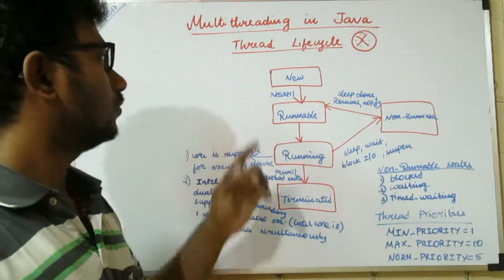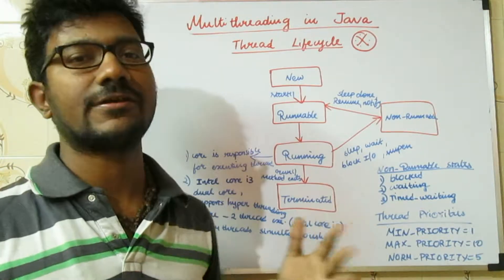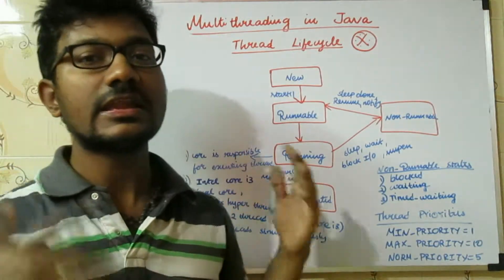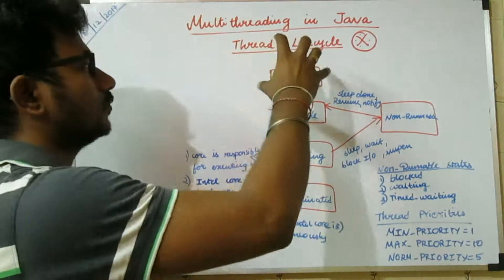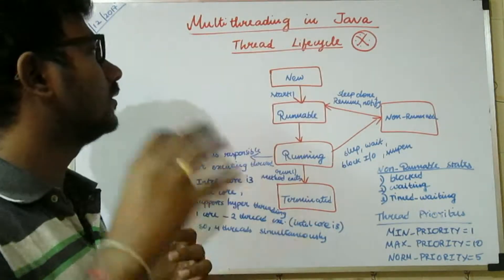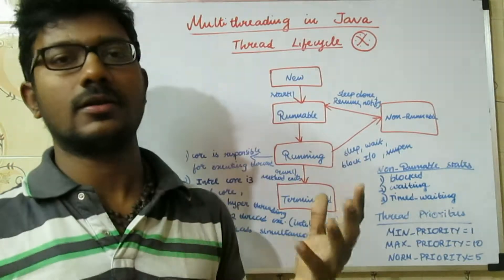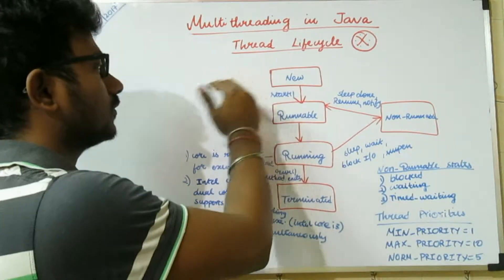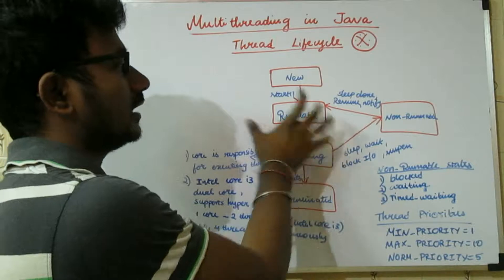The New stage is where threads are created. If you create N number of threads, then N number of threads would be created in this stage only. All those threads are eligible for running, so all those threads would come to the Runnable stage.